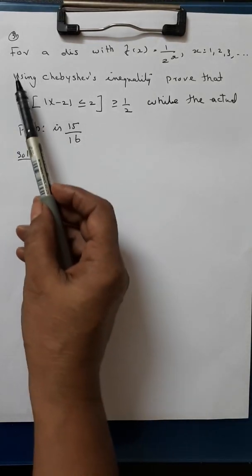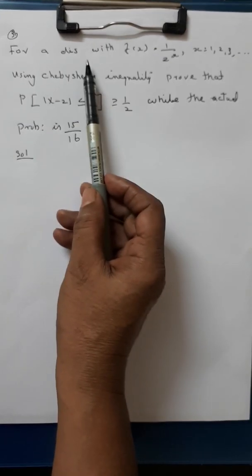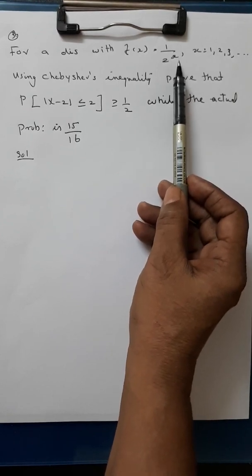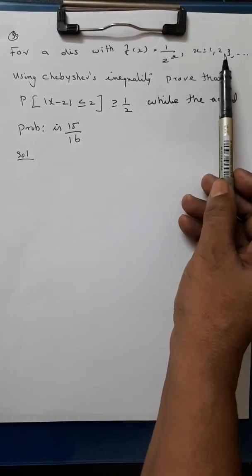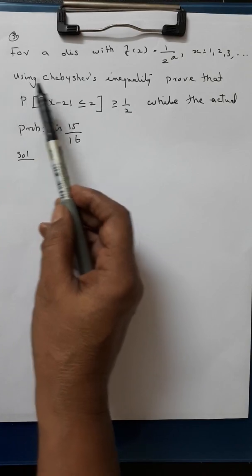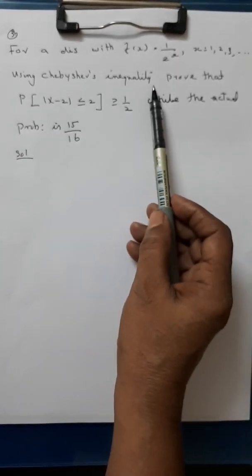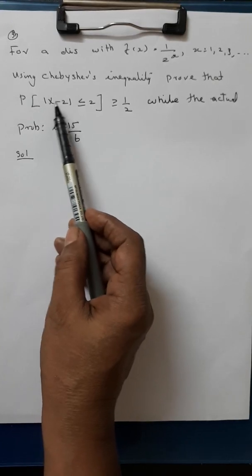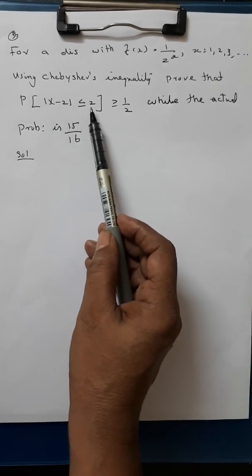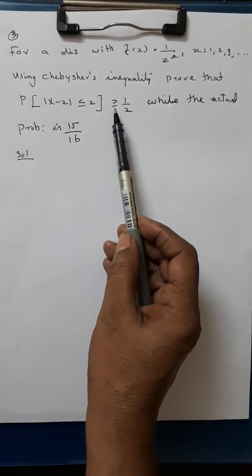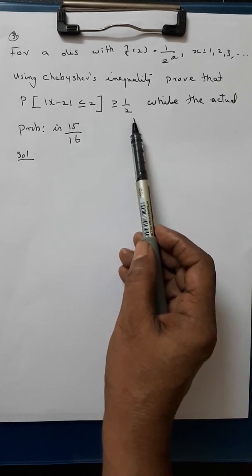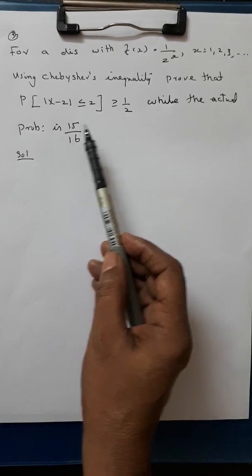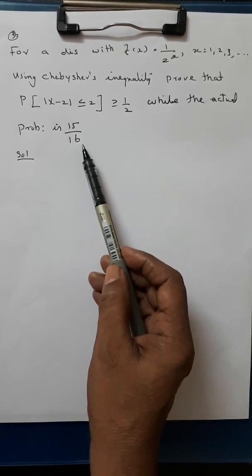Third problem. For a distribution with f(x) = 1/2 raised to x, where x varies from 1, 2, 3, etc. Using Chebyshev's inequality, prove that the probability of |x minus 2| less than or equal to 2 is greater than or equal to 1/2, while the actual probability is 15 by 16.